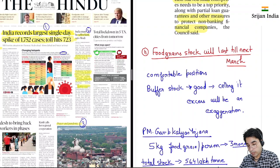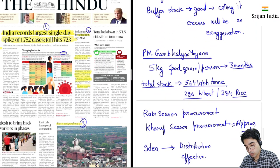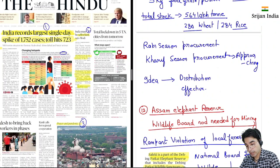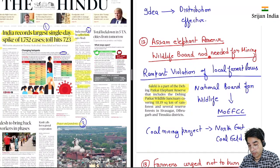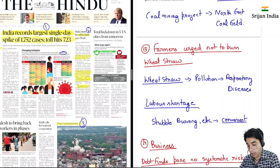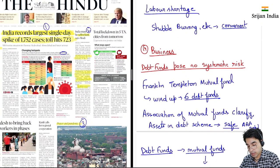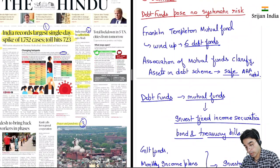Food grain stocks will last till next March — hamare paas abhi sufficient stock hai. Jo issue hai, idea hai, woh hume distribution effective banane ki zarurat hai. Then twelfth is about Assam Elephant Reserve — Wildlife Board not needing for mining. Yahan pe abhi rampant violation ho raha hai local forest laws ka. Then farmers urge not to burn weed straw. Then business news mein hum dekhenge debt funds — debt funds kya hota hai? And they pose no systematic risk.